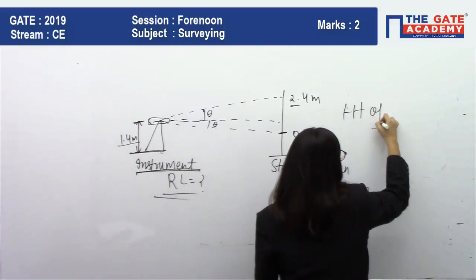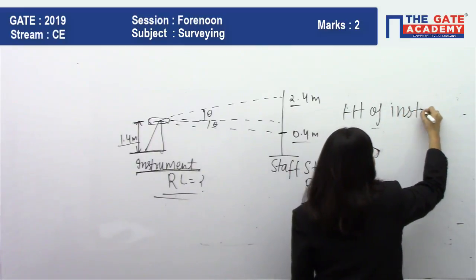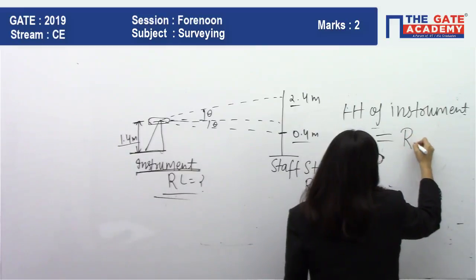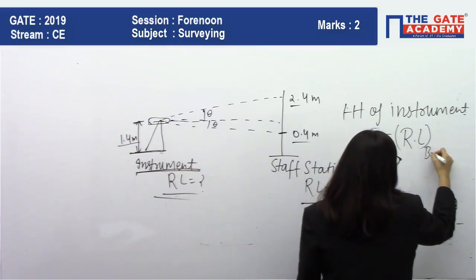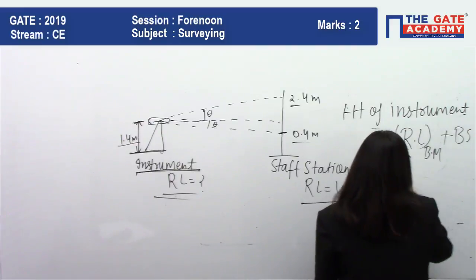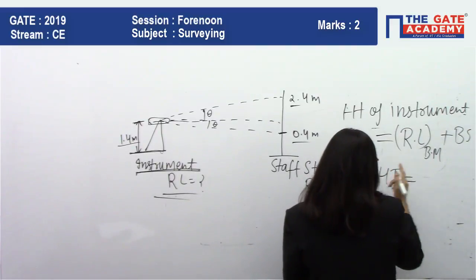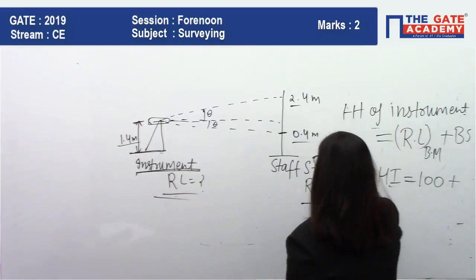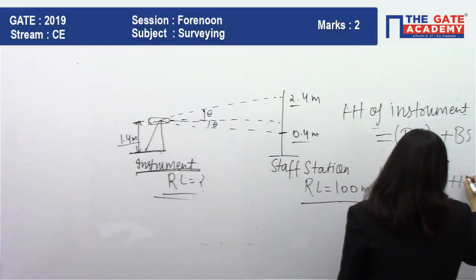You know the height of instrument formula: height of instrument equals RL of benchmark plus backsight. You can calculate the height of instrument. This RL is given as 100 plus backsight is 1.4.